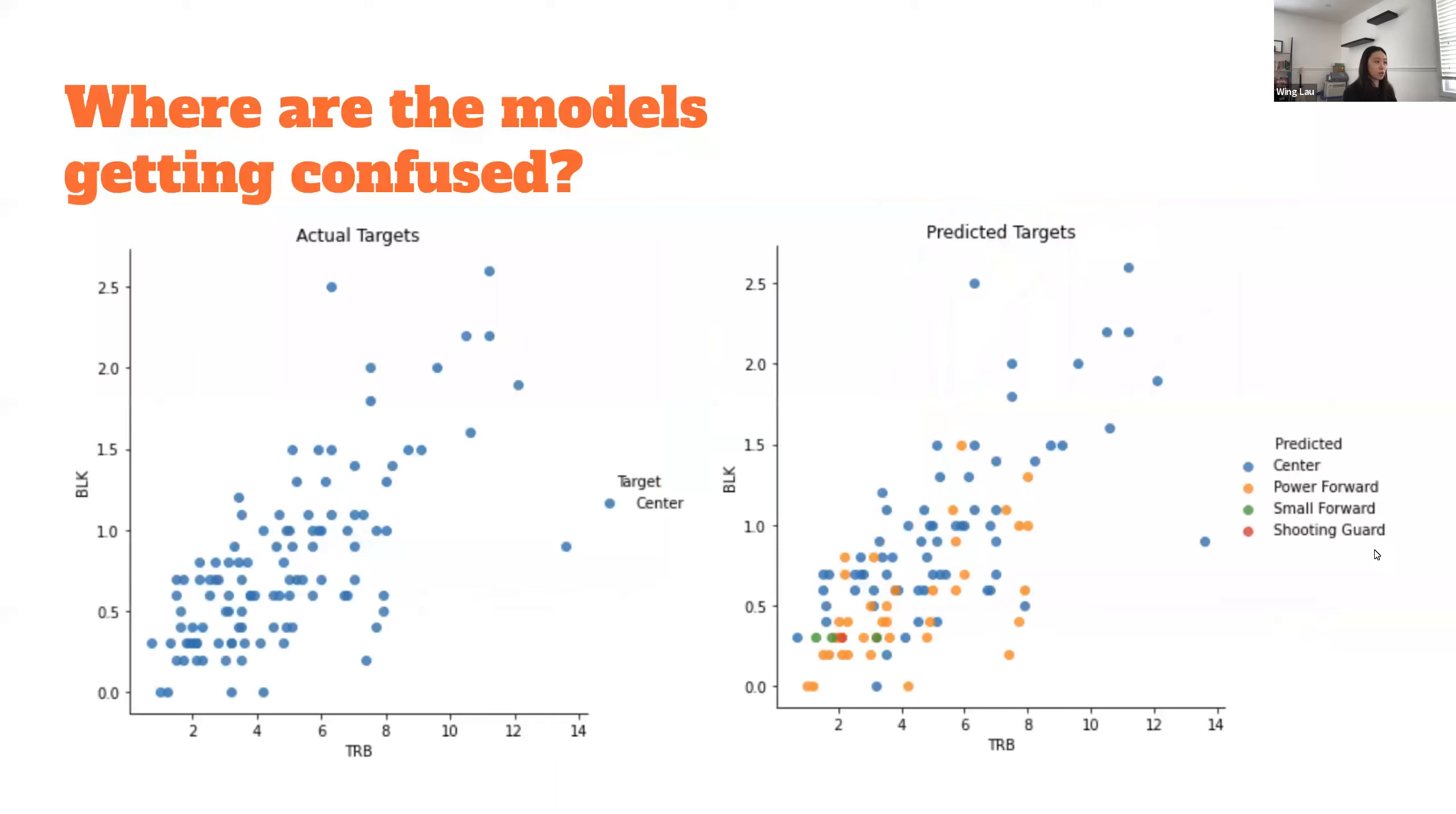Looking at our model, the left is actual targets. For simplicity, we're looking only at centers, and the right is predictive targets. As you can see, we're getting centers mostly confused with power forwards.